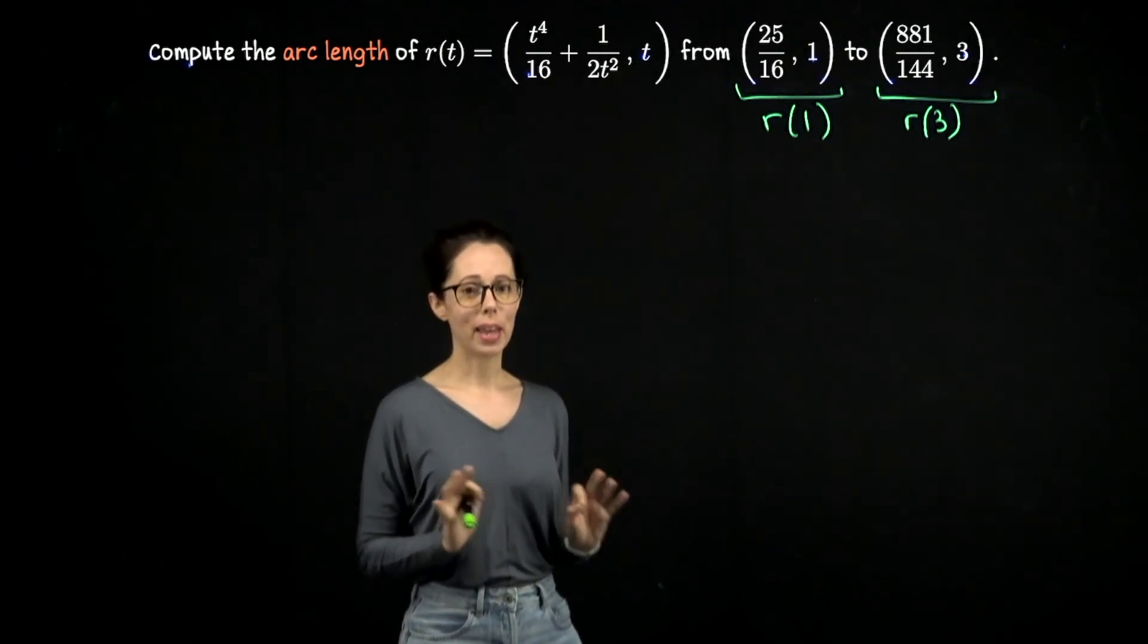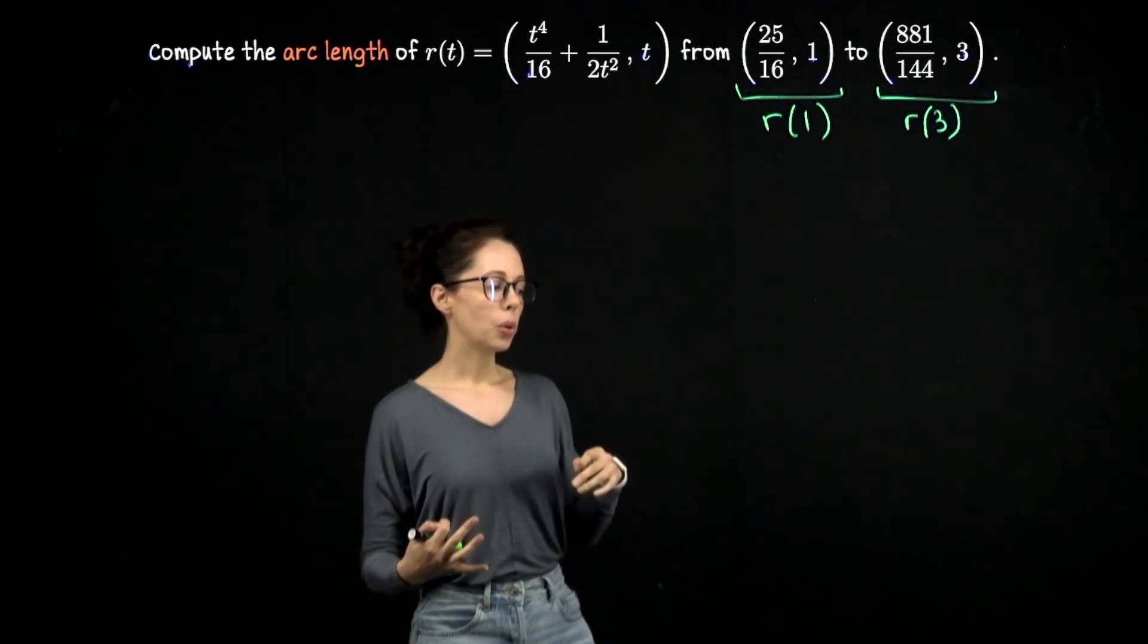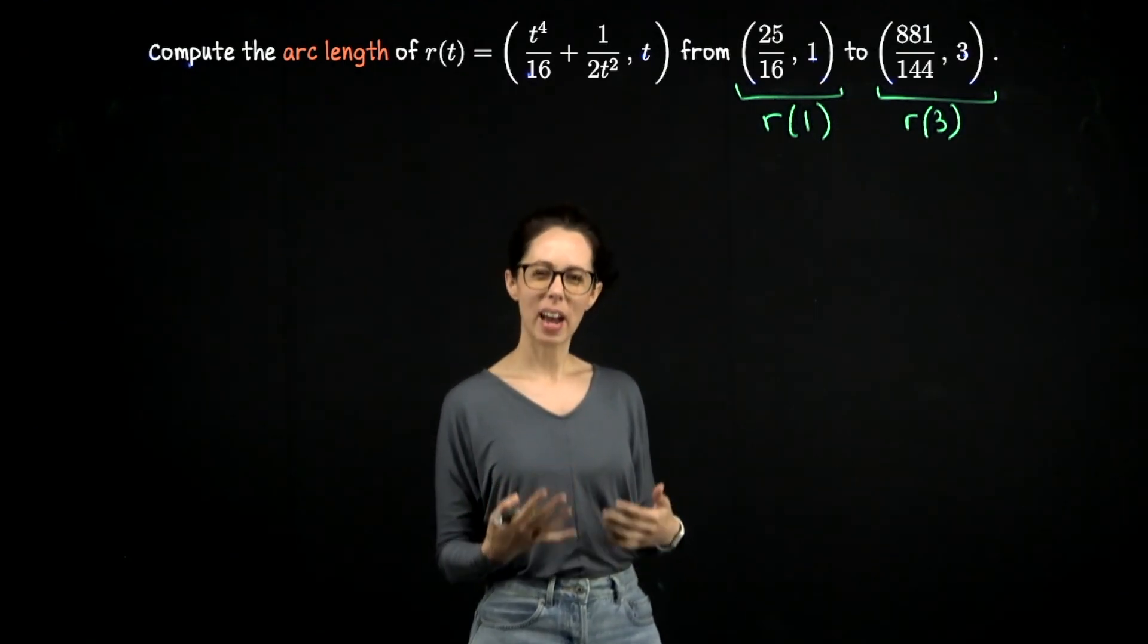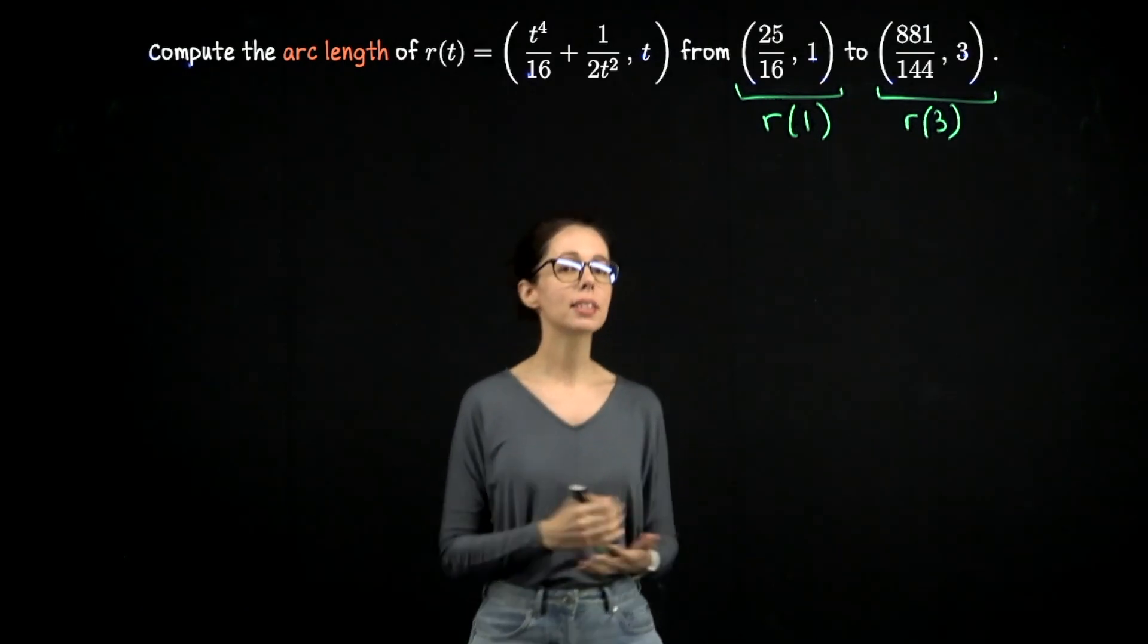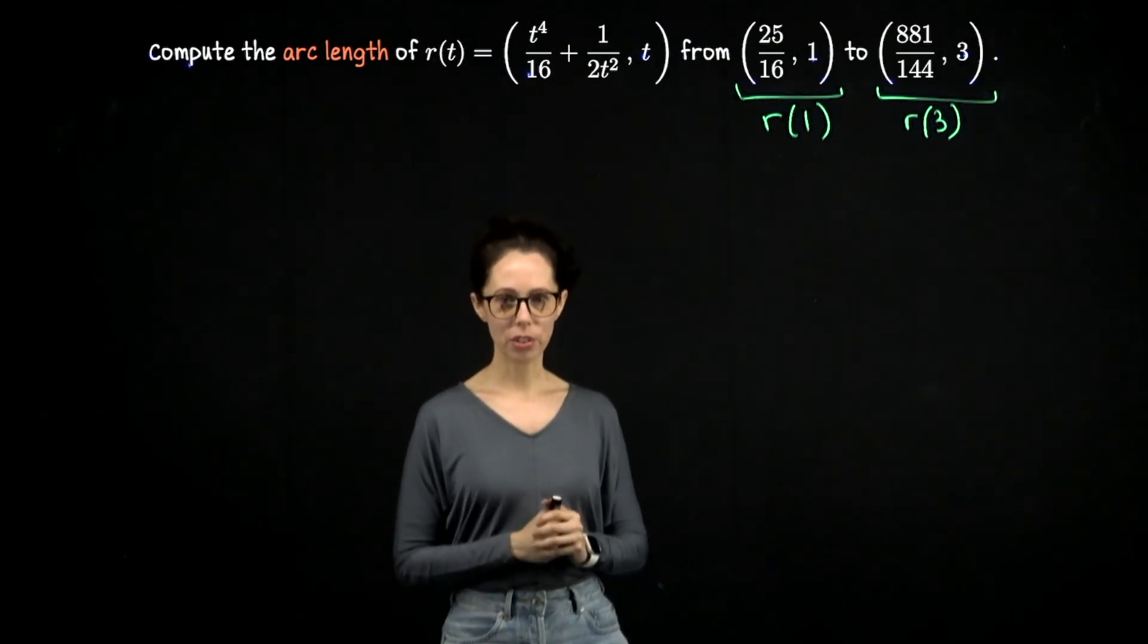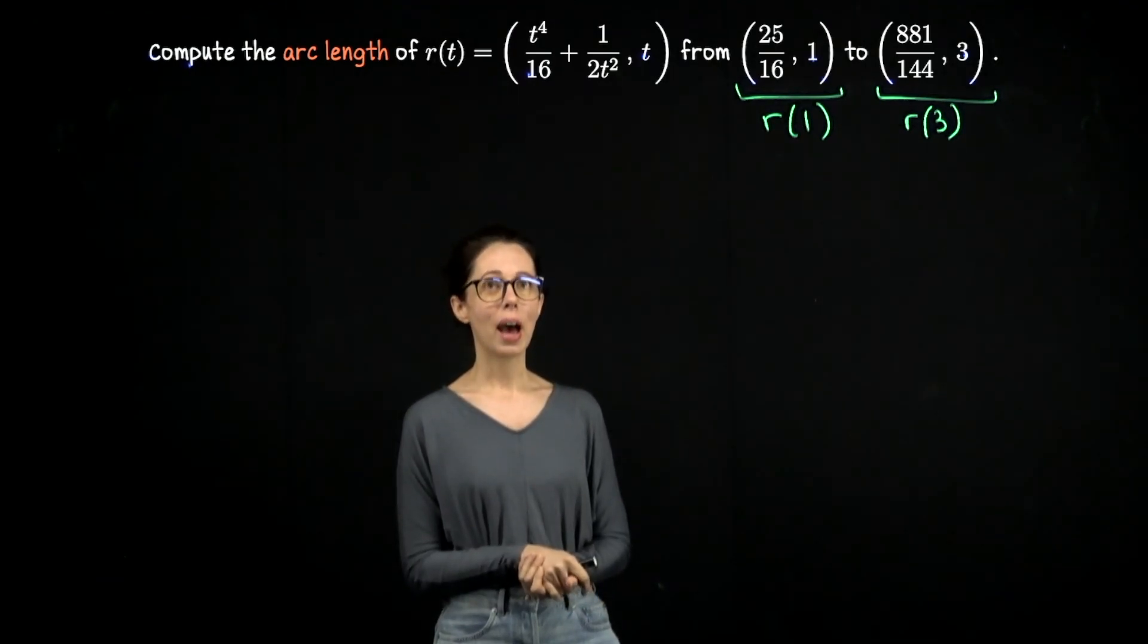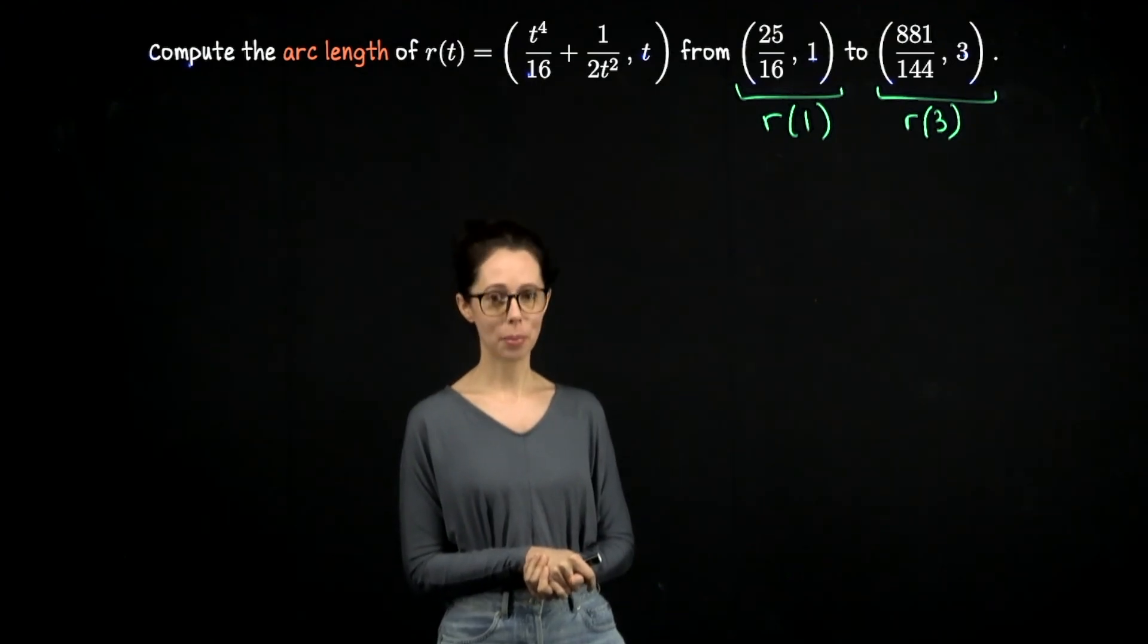We will need to take the square root of that sum. I claim it can be done by hand. So sometimes with arc length computations, you end up with an integrand that you can't actually integrate by hand, but in this case, we really can. So go ahead and try it. See if you can take it as far as you can. If you get stuck, that's why I chose this problem as an example. I will come back and work through this entire computation.